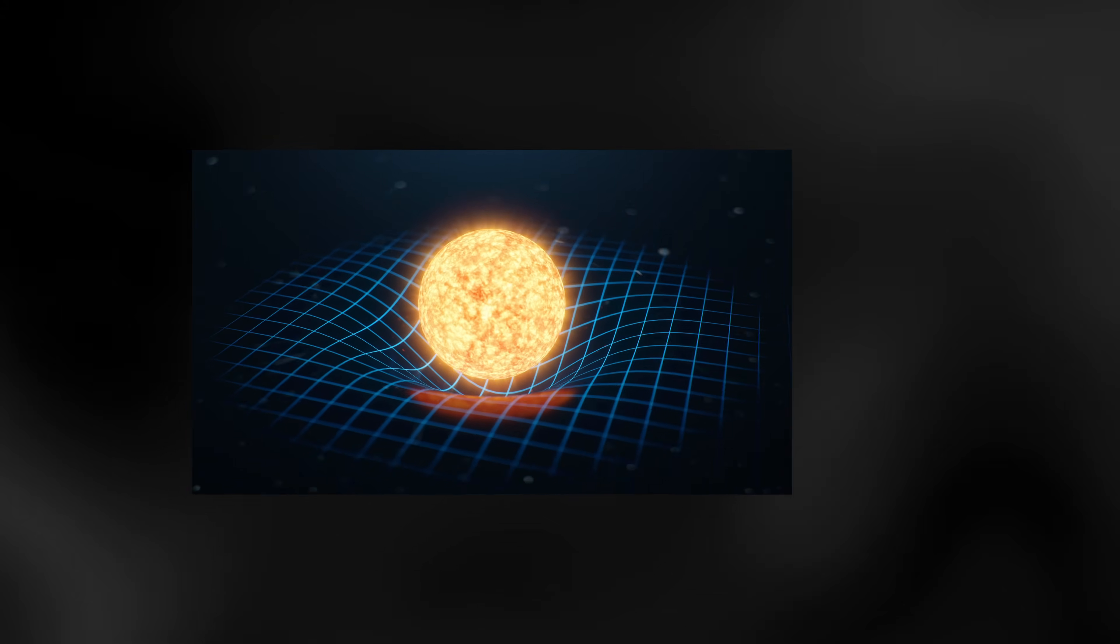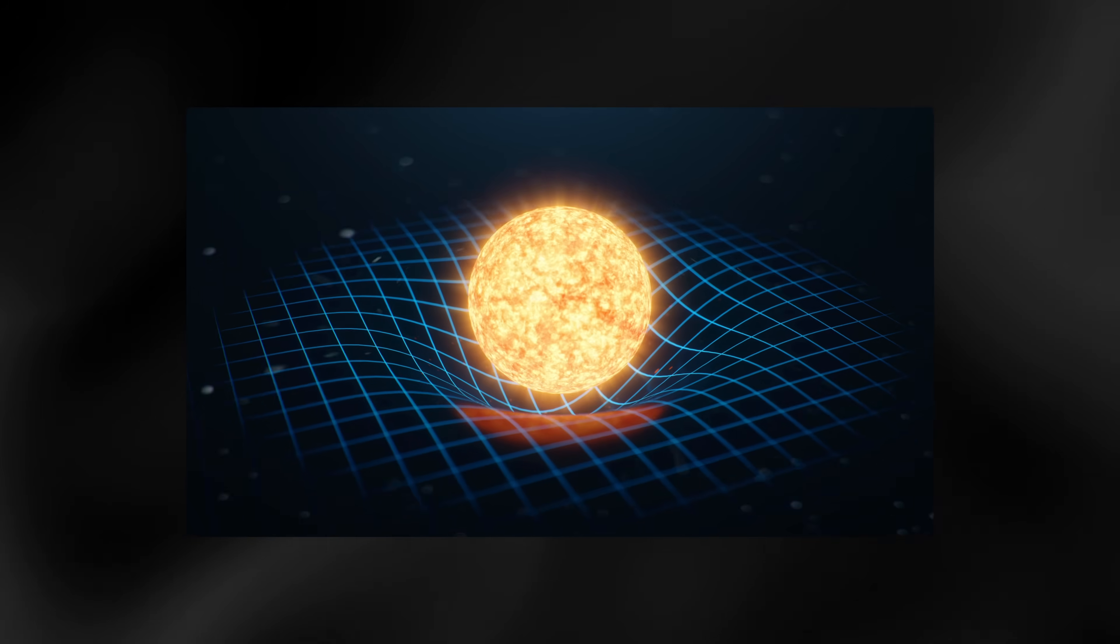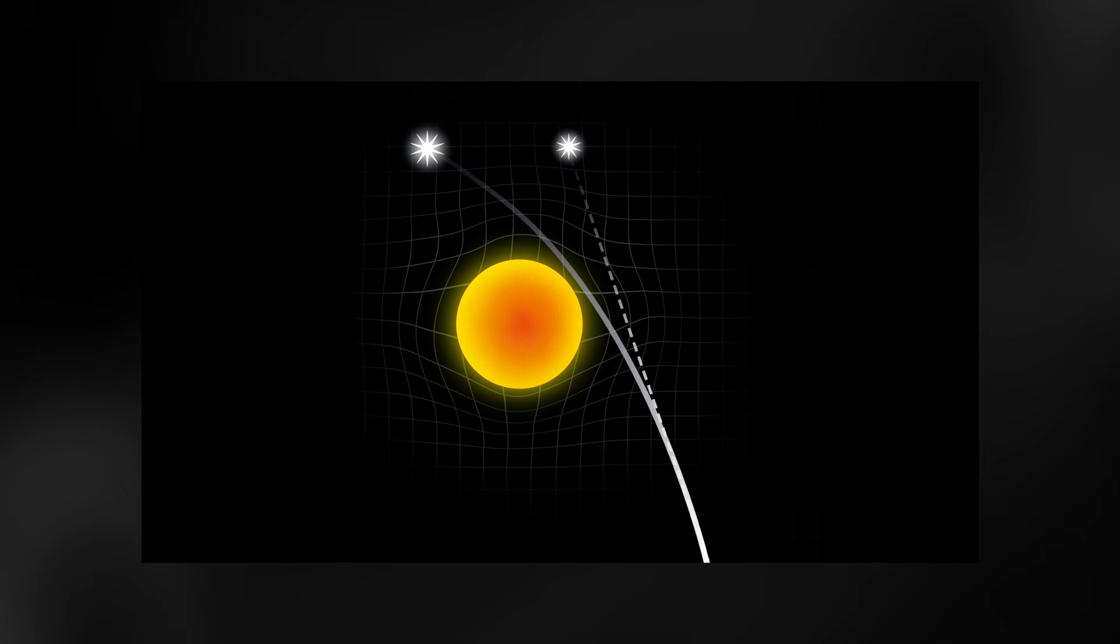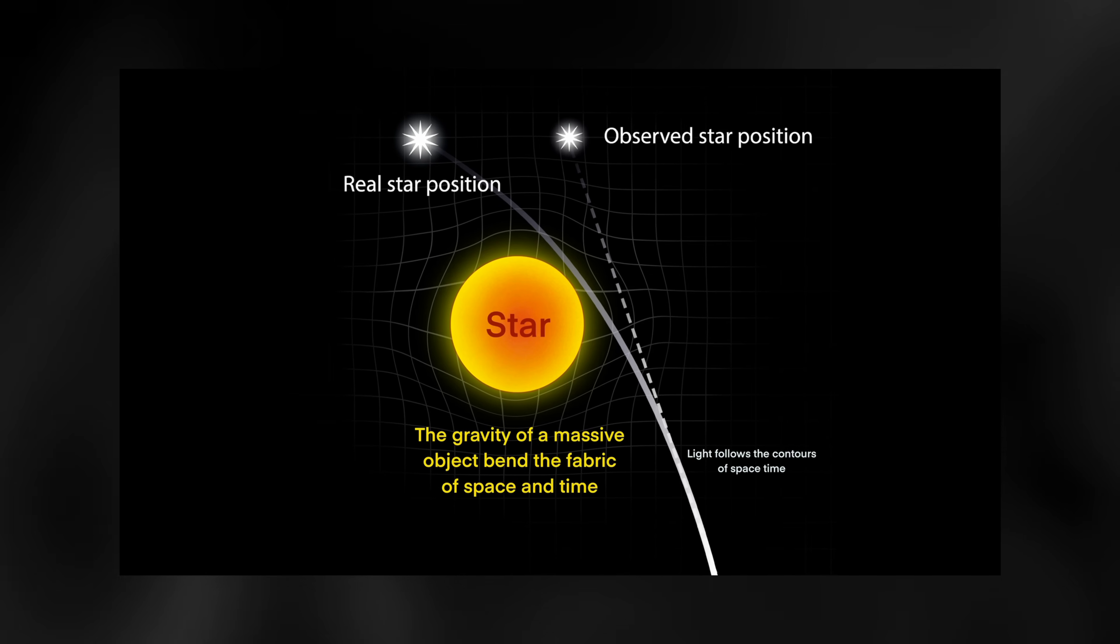Light naturally travels in a straight line throughout space. However, near massive objects like stars or black holes, space and time become curved. As a result, the straight path that light follows through this curved spacetime appears to us as a bent trajectory.